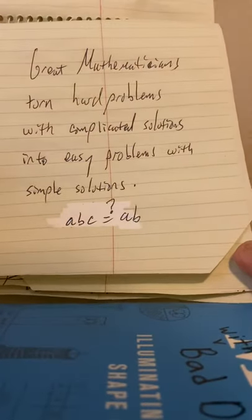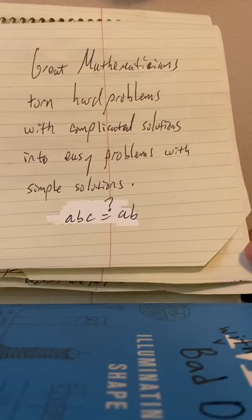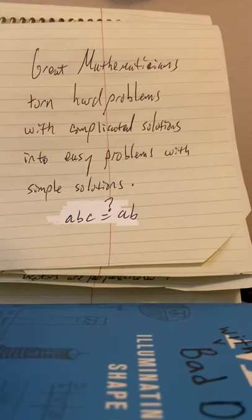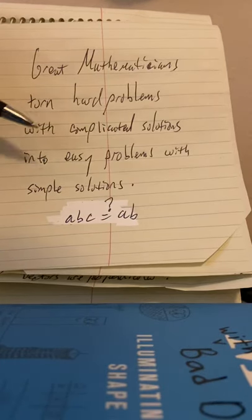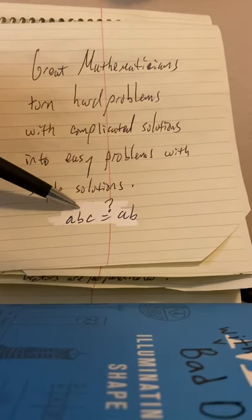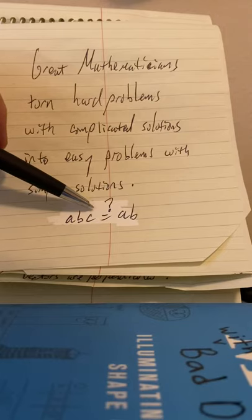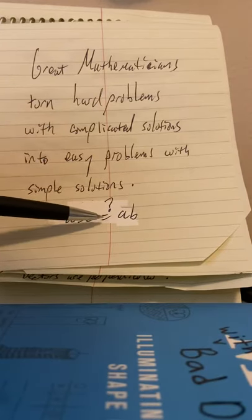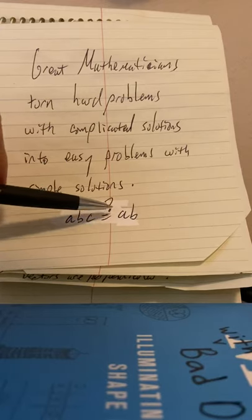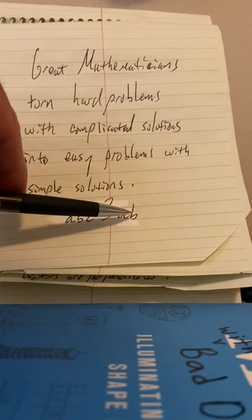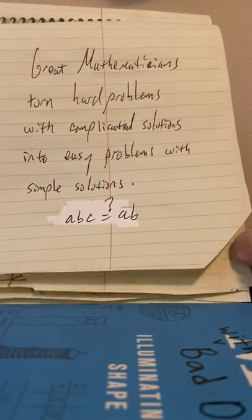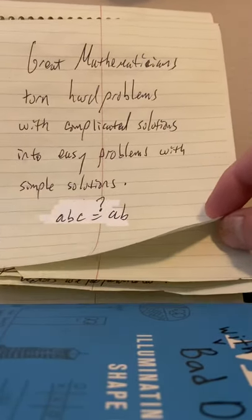Great mathematicians turn hard problems with complicated solutions into easy problems and have the patience to find the simple solutions. We had the magnitude of v times the magnitude of w times cosine of the angle between them. That's three numbers, a, b, c. And we wanted to know when, under what conditions, would it equal just the magnitude of v times the magnitude w? In other words, the product of these first two. That's a little bit simpler to think about. When do these three numbers equal those two numbers?